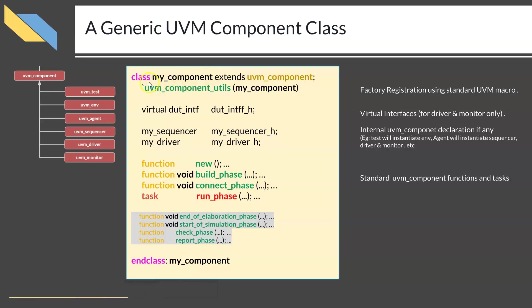Immediately after the class name definition, the first line in any UVM component class should be a factory registration macro. This factory registration macro is common for all these classes — whether you are using a UVM test, UVM agent, or UVM driver. For all of them you will use the same macro with the name `uvm_component_utils`. Since it is a macro, you use the backtick which is specific to SystemVerilog syntax. Within the bracket you pass the same class name given at the beginning.